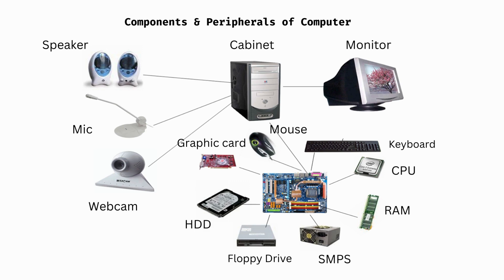Now, components and peripherals of the computer. The first component is the cabinet or system case. Next is the monitor — this is the dome-shaped cathode ray tube monitor. Next is the CPU, which stands for central processing unit, also called the microprocessor. Next is random access memory, which is temporary memory — this is the RAM. Next is the switch mode power supply, which supplies current by converting alternate current to direct current.